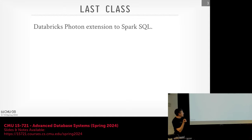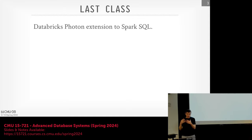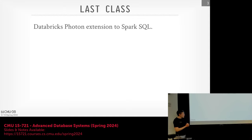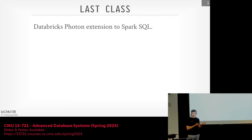Last class we were talking about Databricks Photon. That wasn't a full-fledged system — it was an extension library that Databricks added into Spark. The Java code running Spark SQL would invoke it through JNI, and it was a C++ vectorized engine that would offload computation from Spark SQL queries down to C++, showing pretty significant performance gains.